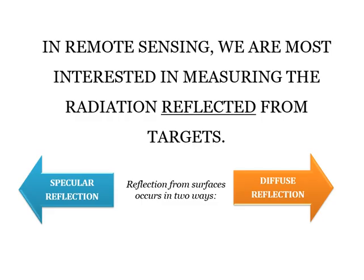In remote sensing, we are most interested in measuring the radiation reflected from the target. Out of reflected energy, transmitted energy, and absorbed energy, remote sensing uses the reflected energy for interpreting features and acquiring data about any material, species, or entity in the world. Reflections from surfaces occur in two ways: specular reflection and diffused reflection. These reflections help us acquire information about entities in the real world.